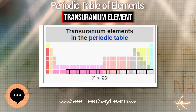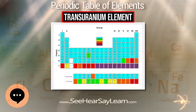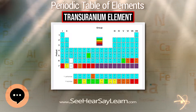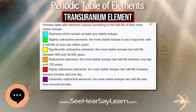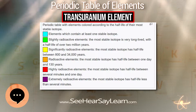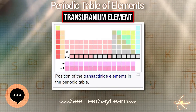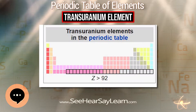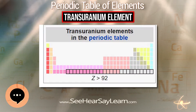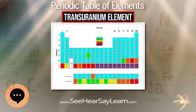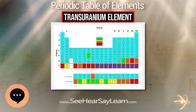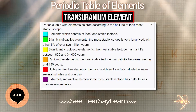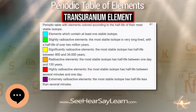Transuranic elements that have not been discovered, or have been discovered but are not yet officially named, use IUPAC's systematic element names. The naming of transuranic elements may be a source of controversy. So far, essentially all the transuranic elements have been discovered at four laboratories: Lawrence Berkeley National Laboratory in the United States, the Joint Institute for Nuclear Research in Russia, the GSI Helmholtz Center for Heavy Ion Research in Germany, and RIKEN in Japan.